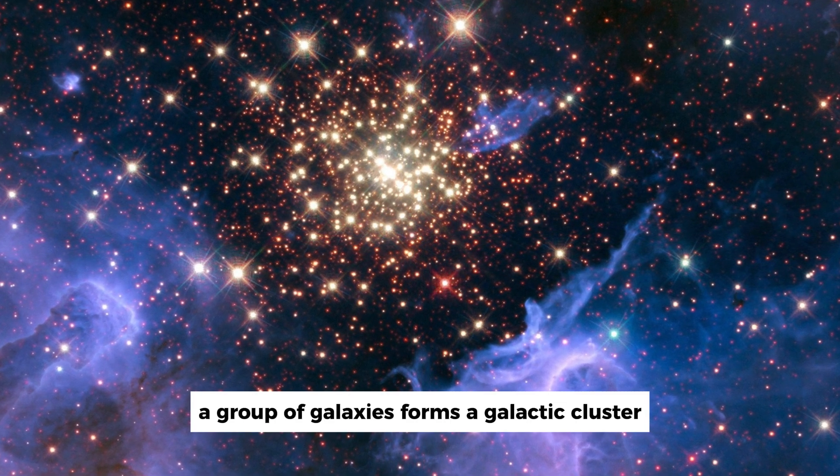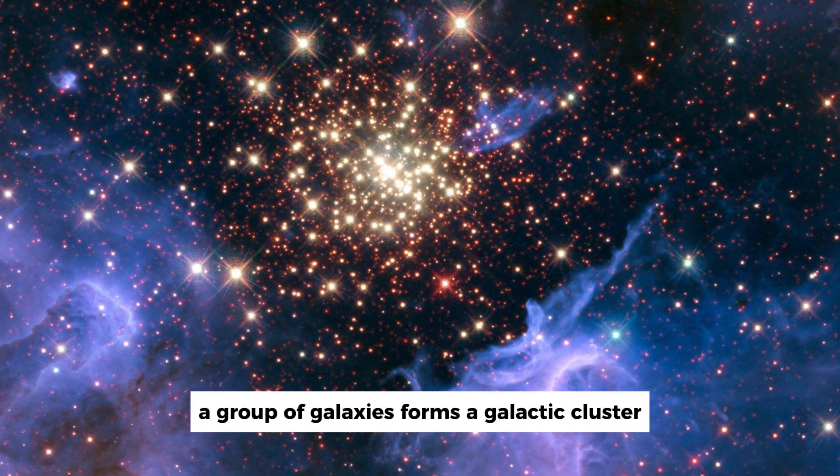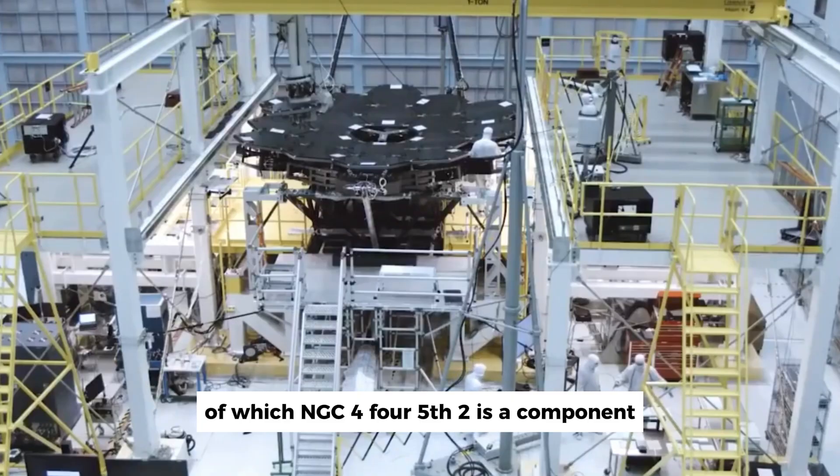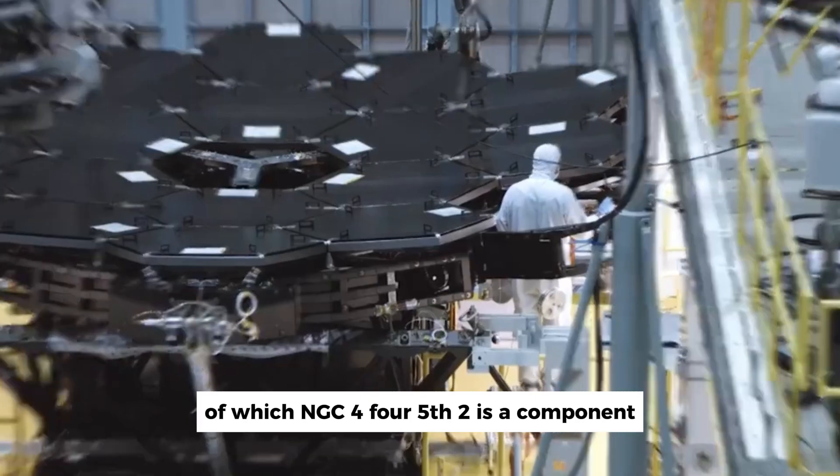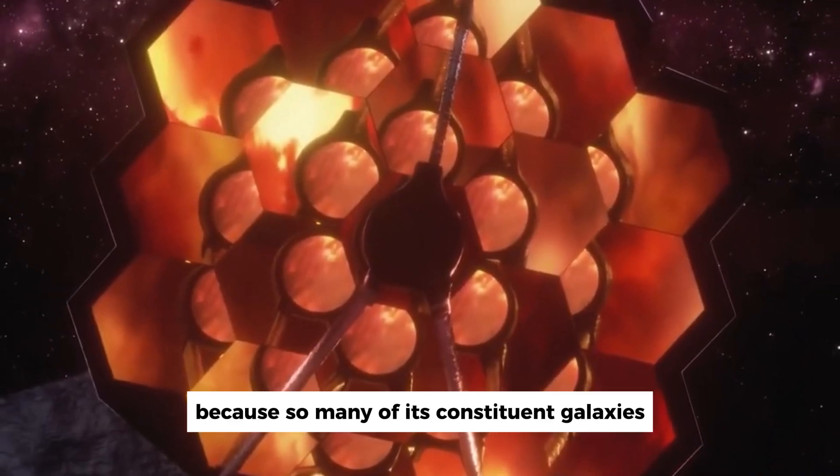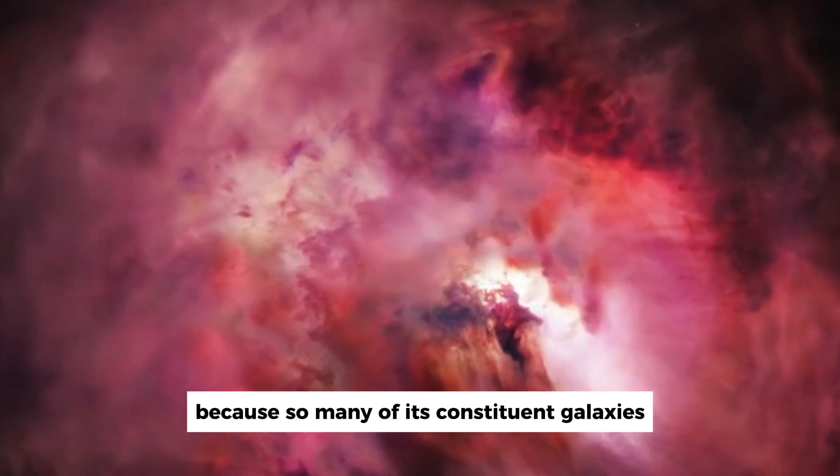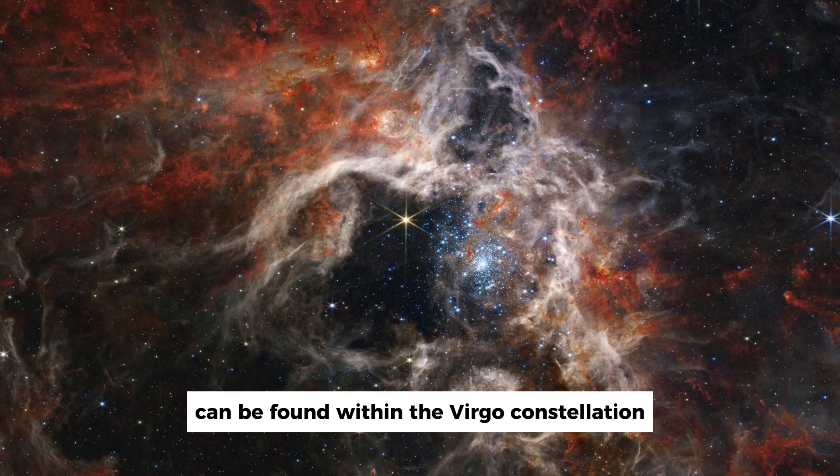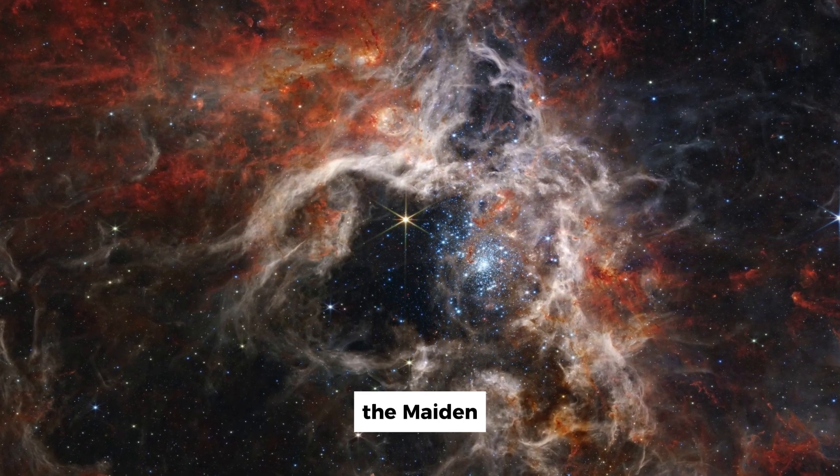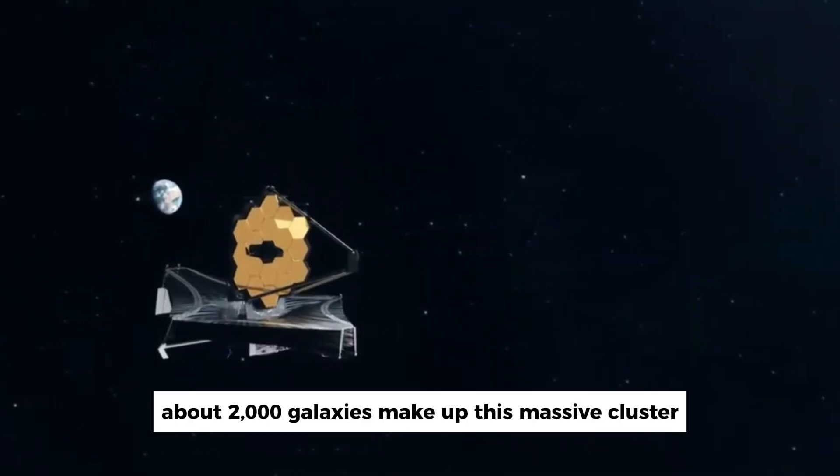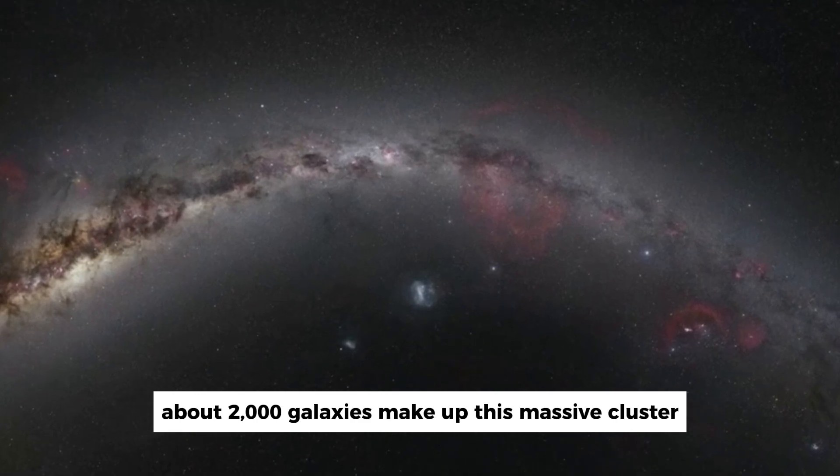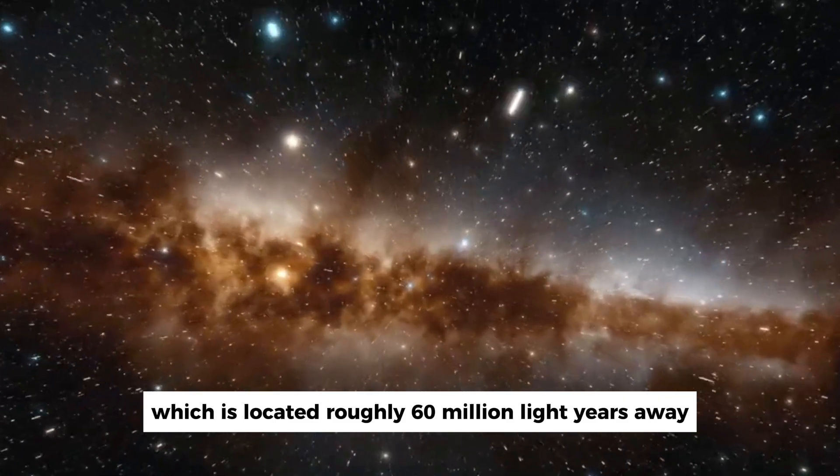A faint ring of stars around the galaxy's periphery helps to round out the image. A group of galaxies forms a galactic cluster, the Virgo cluster, of which NGC 4452 is a component. It gets its name because so many of its constituent galaxies can be found within the Virgo constellation, the Maiden. About 2,000 galaxies make up this massive cluster, which is located roughly 60 million light years away.